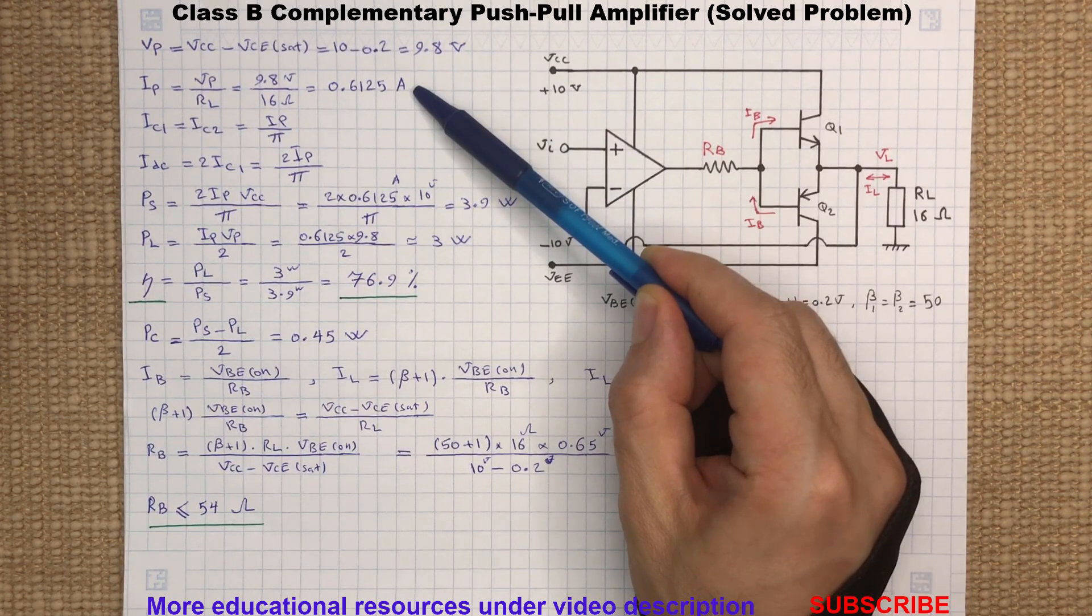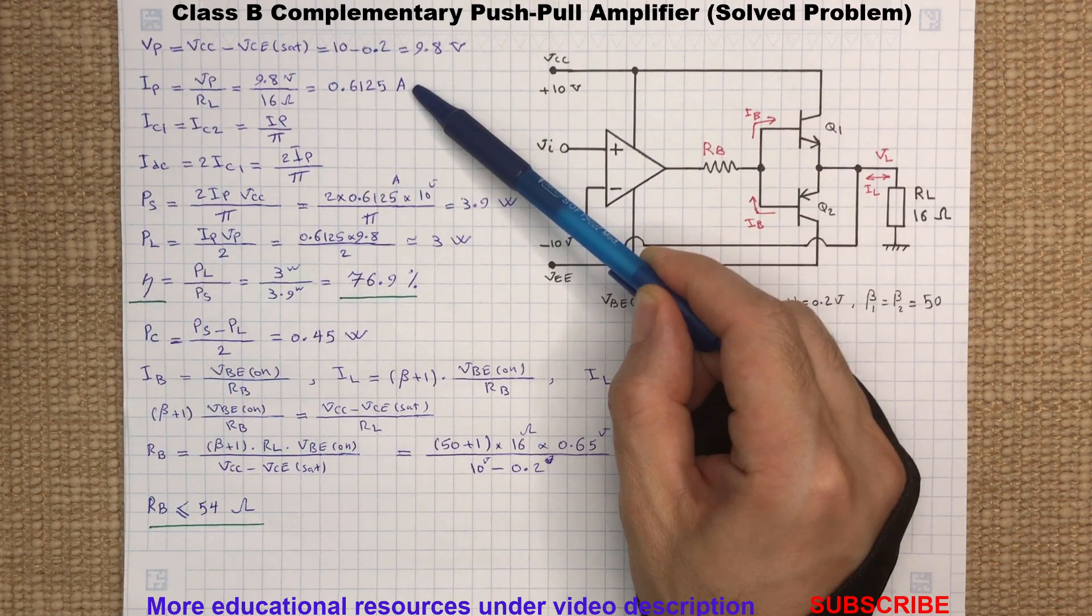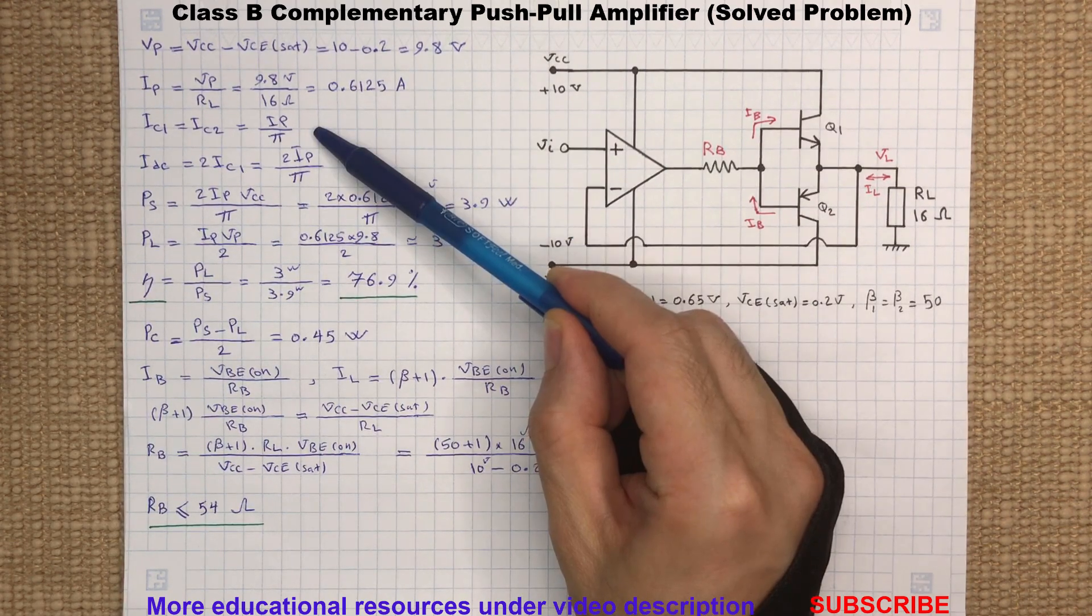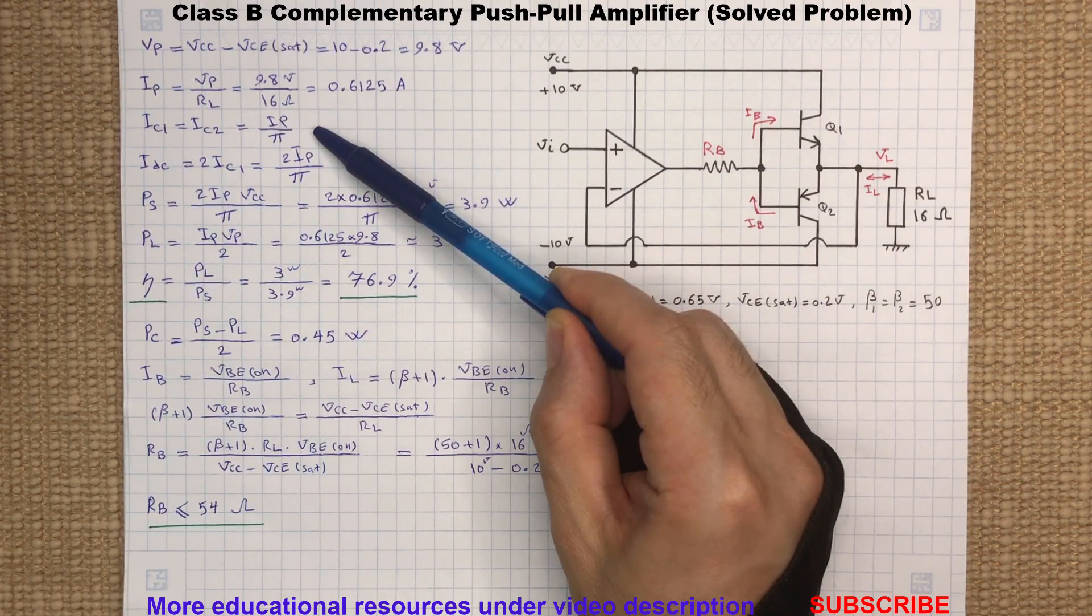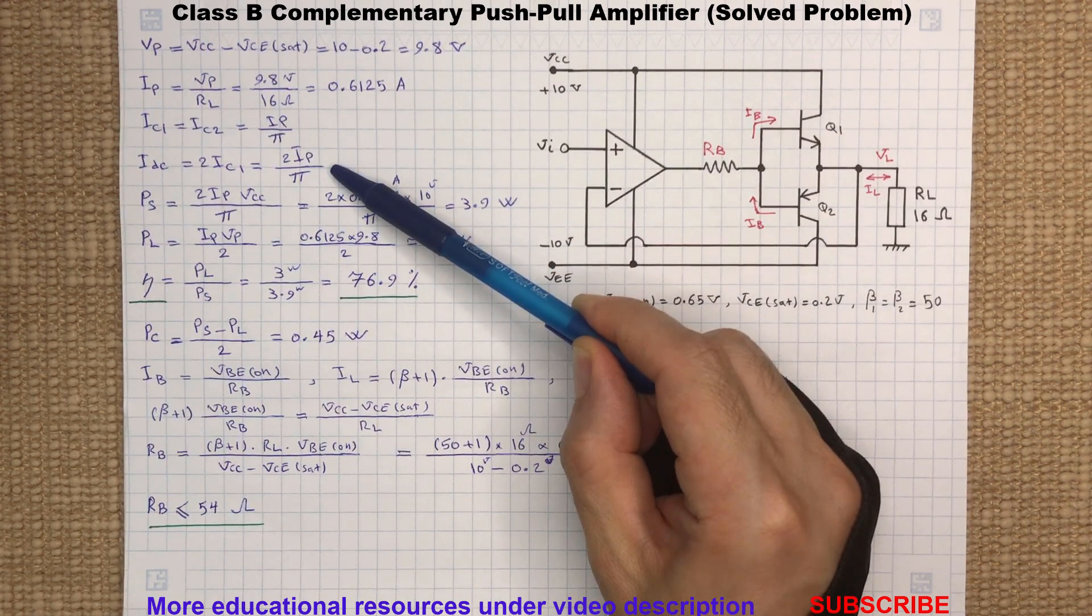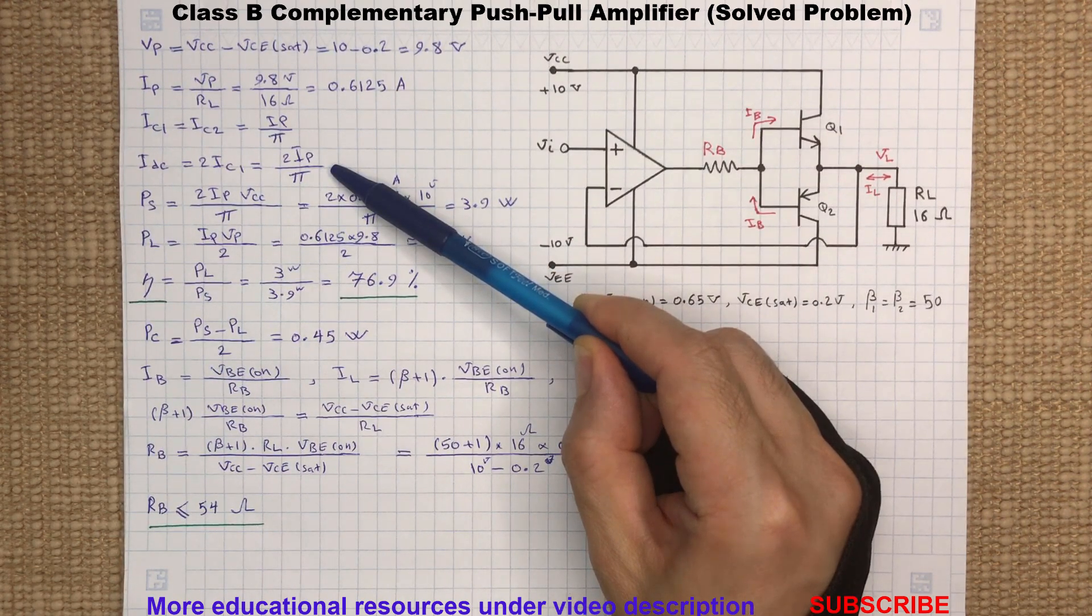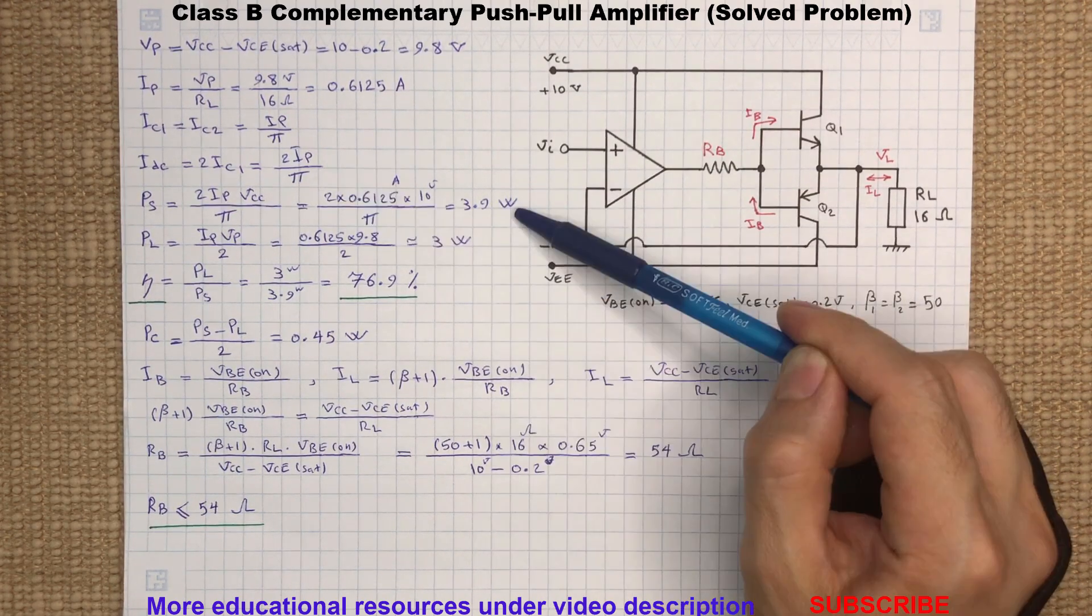The maximum current flowing through the load will be the maximum peak voltage divided by the load resistance. If we divide the peak current by pi, we will get the average current flowing through each transistor and also the load. Therefore, the total average current drawn from the power supply by transistors Q1 and Q2 will be twice the individual current.